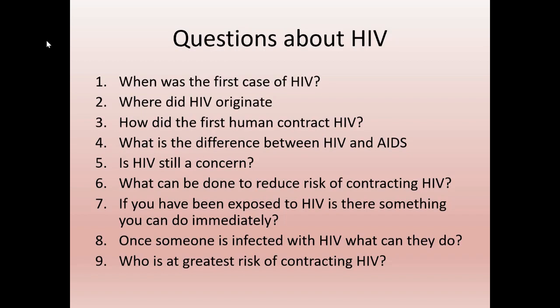The questions include: when was the first case of HIV? Where did HIV originate? How did the first human contract HIV? What is the difference between HIV and AIDS? Is HIV still a concern? What can be done to reduce the risk of contracting HIV? If you've been exposed to HIV, is there something you can do immediately? Once someone is infected with HIV, what can they do? And finally, number nine, who is at the greatest risk of contracting HIV today?